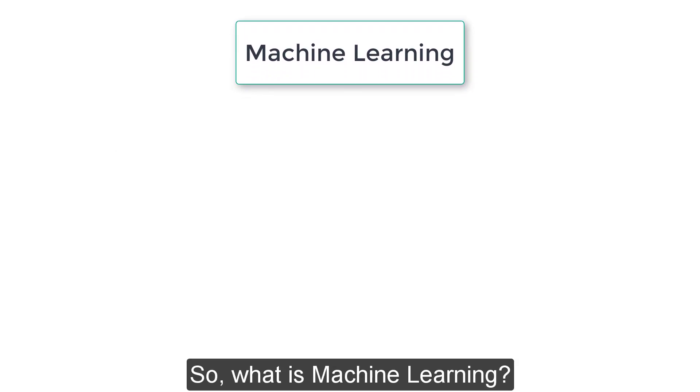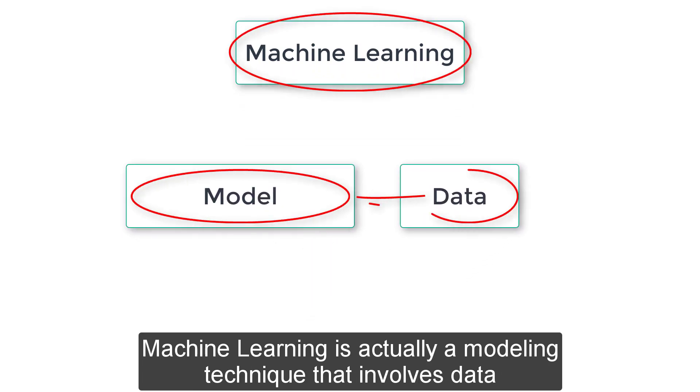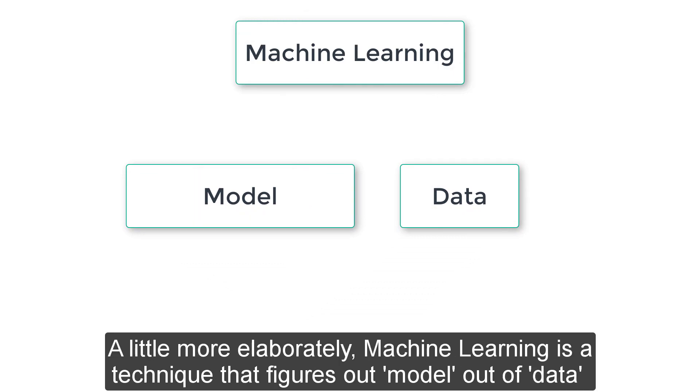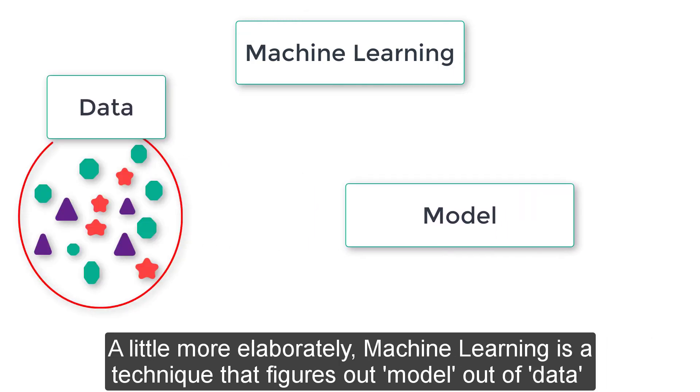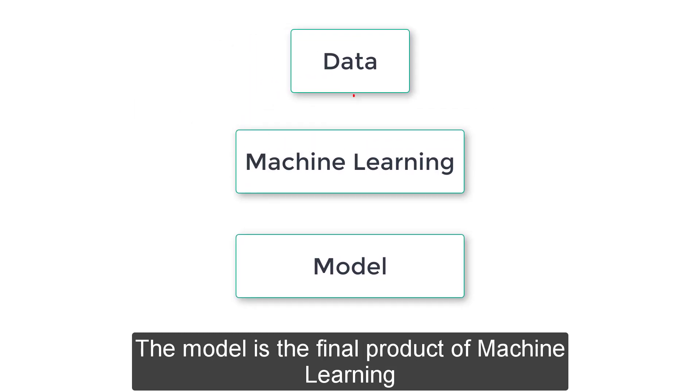Machine learning is actually a modeling technique that involves data. A little more elaborately, machine learning is a technique that figures out the model out of data. The data literally means information such as documents, audio, images, etc. The model is the final product of machine learning.